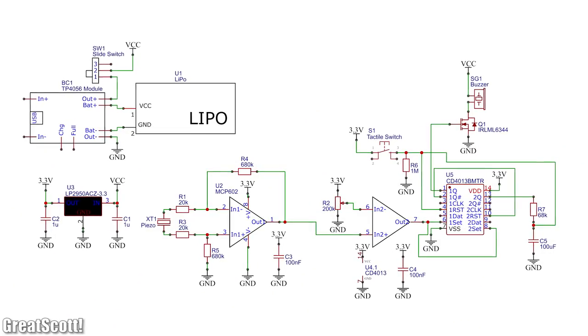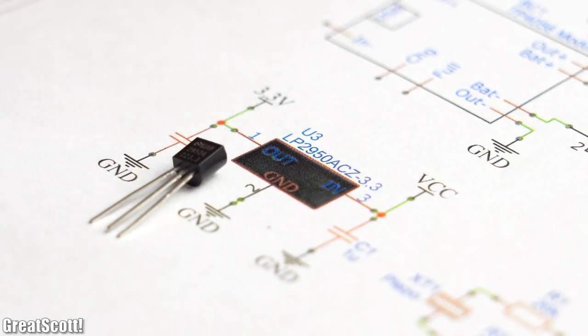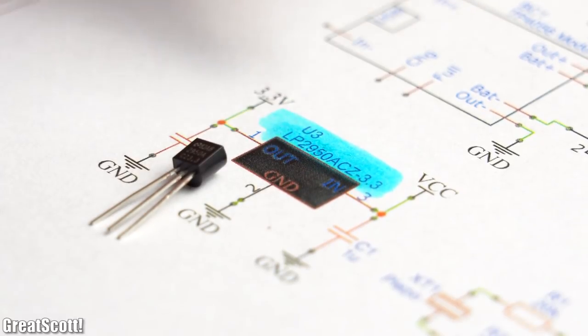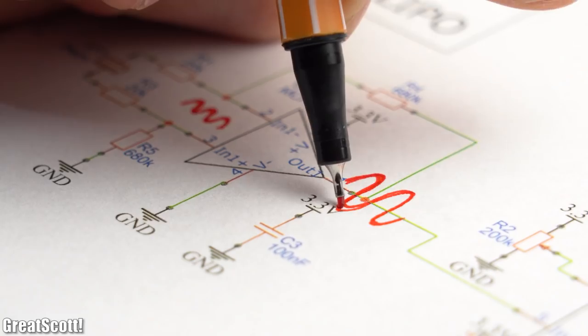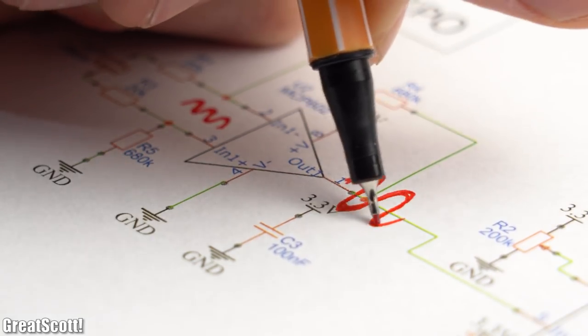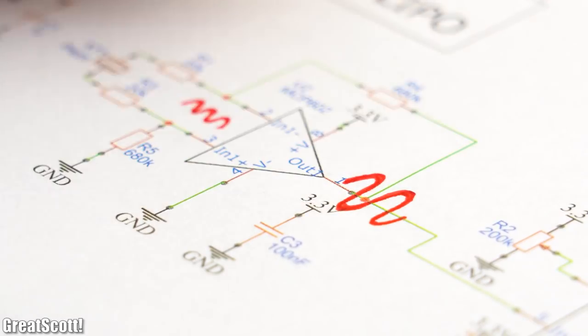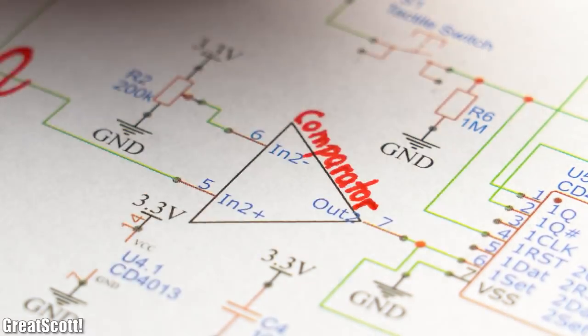At first the LP2950 3.3V regulator creates a stable 3.3V for all ICs and reference voltages. Like already discussed, the first op-amp stage amplifies the piezoelectric disc voltage. The second op-amp stage however acts as a comparator.